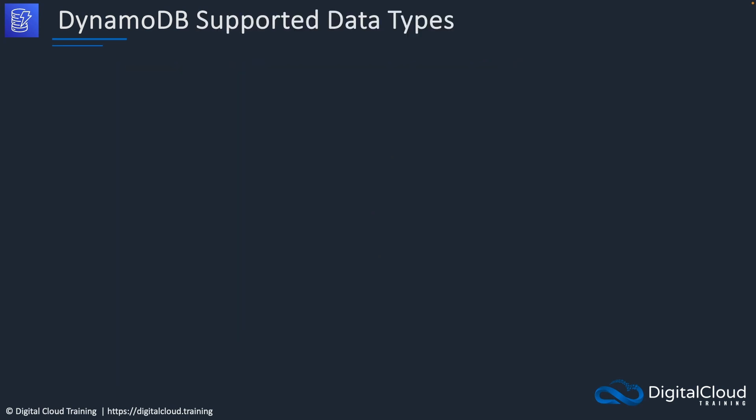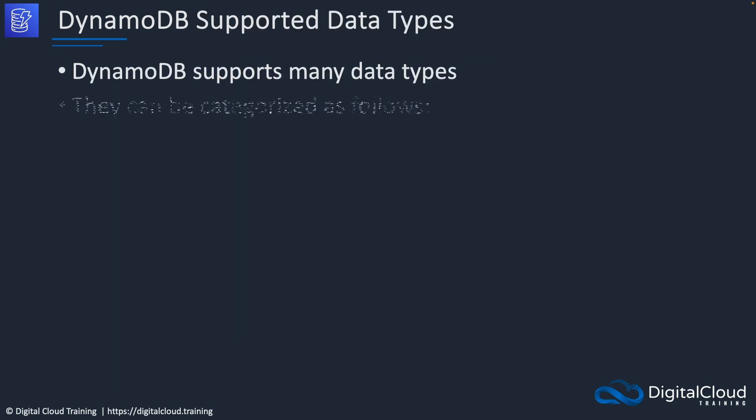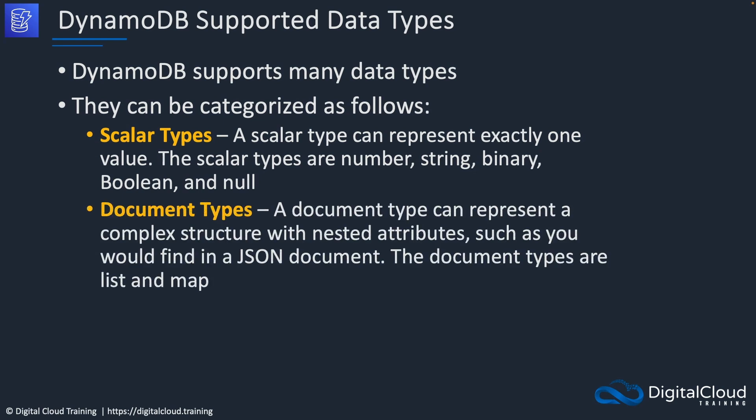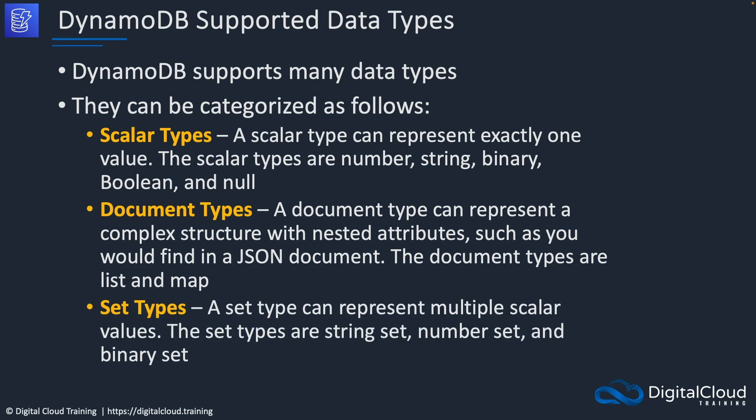DynamoDB supports several data types, categorized as scalar types — which include numbers, strings, binaries, boolean, and null — document types such as JSON documents, and set types that represent multiple scalar values, such as string set, number set, or binary set.